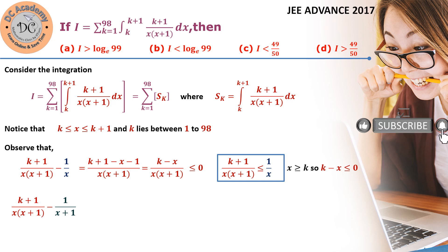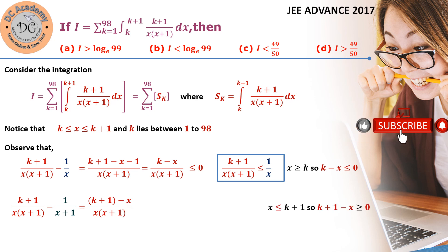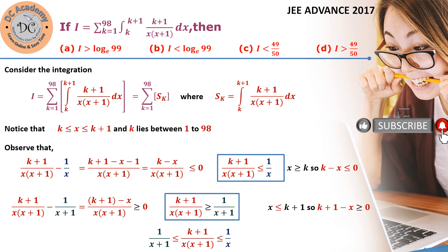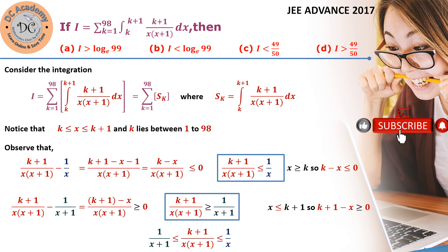Since x is less than k+1, the quantity (k+1 minus x), which is the numerator, is greater than 0. Therefore the difference is greater than 0, which implies that (k+1)/[x(x+1)] is greater than 1/(x+1). Combining both relations, our integrand lies between 1/(x+1) and 1/x. This is the key tricky step.